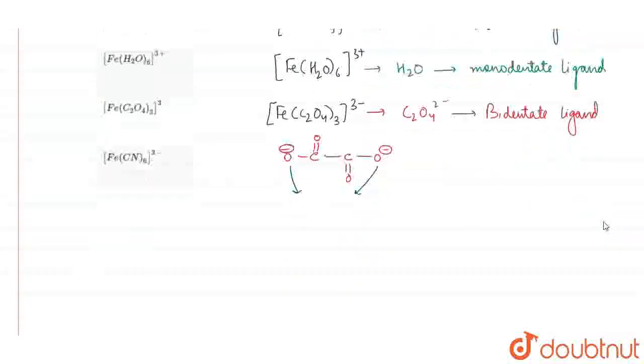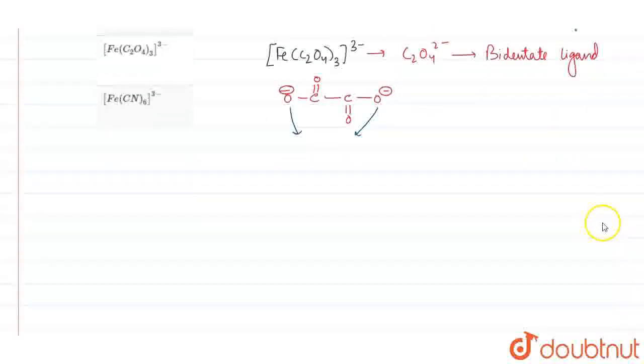Now, we will see the structure of this complex. Our structure is like this. Iron has a +3 oxidation state and we have three oxalate ions. So, O, C double bond O, C double bond O, O.